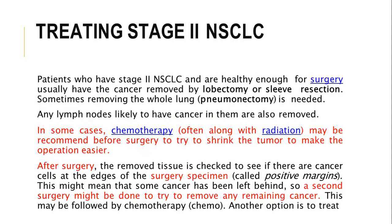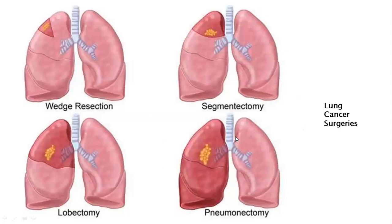For stage 2, since lymph nodes are also affected, chemotherapy — often combined with radiation — may be recommended before surgery to shrink the tumor and make the operation easier. After surgery, the removed tissue is checked for positive margins, and a second surgery might be needed for remaining cancer removal. Procedures performed include lobectomy, sleeve resection, or pneumonectomy.